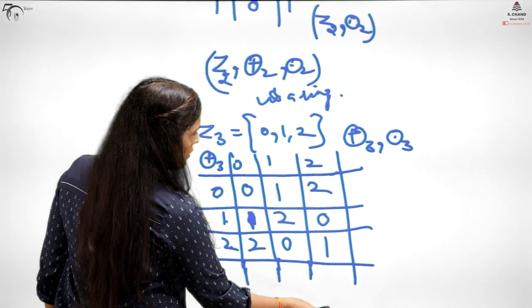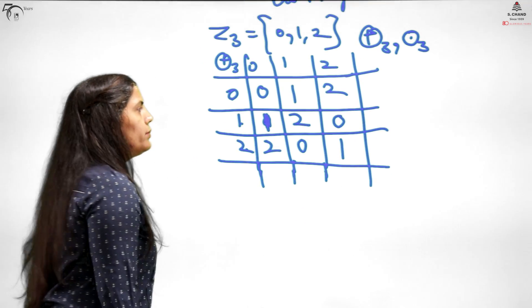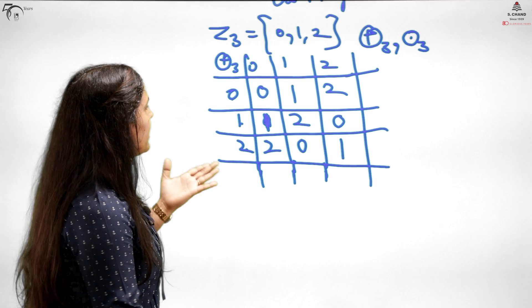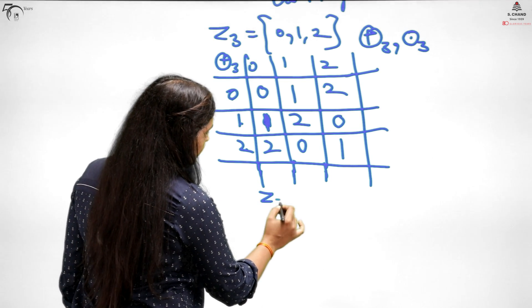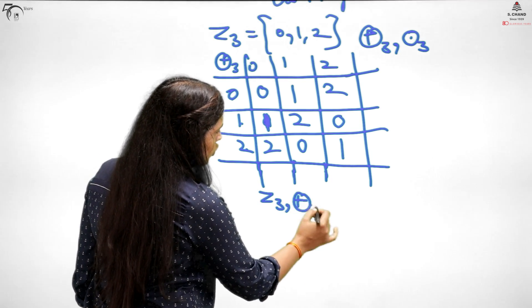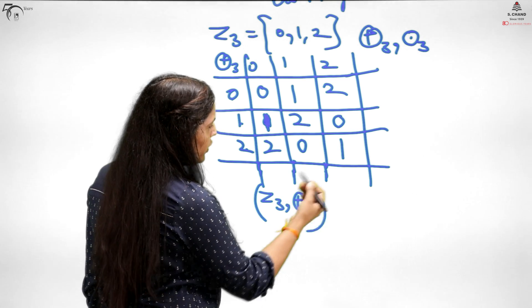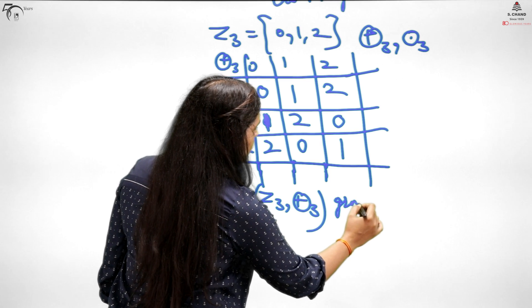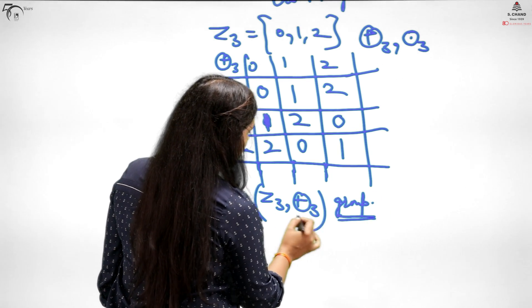What can you tell from this? All rows and columns are different. Since they are different, you can clearly say that this is completely satisfying all properties. I can say it's a group. In short, we can write group also with respect to this.